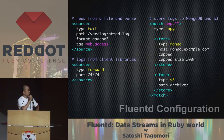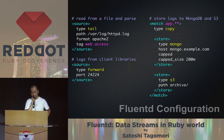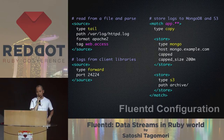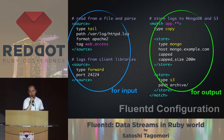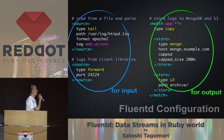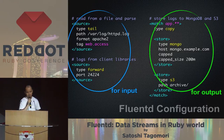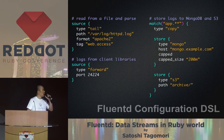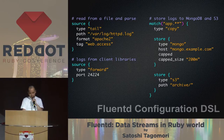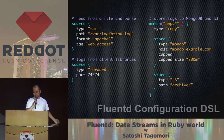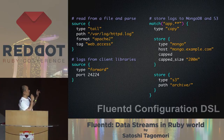Fluentd's configuration syntax is the same as an Apache web server: it has sections, source sections for input plugins, and match sections with tag patterns for output plugins. We can write any number of source and match sections in one Fluentd configuration. Fluentd also has a Ruby DSL configuration syntax, and we can write any Ruby code in this configuration to express loops or enumerators.